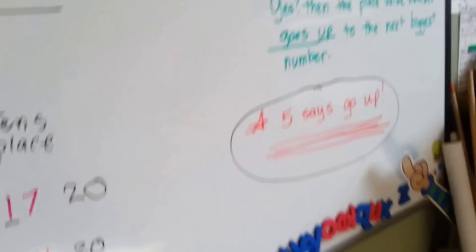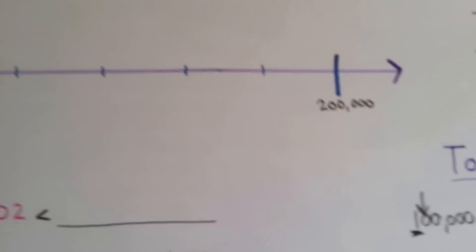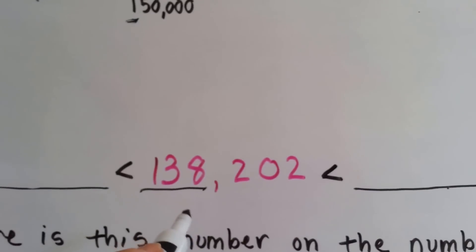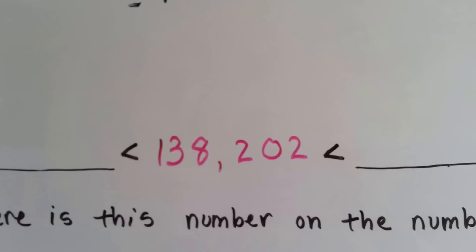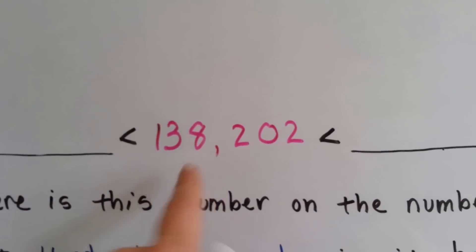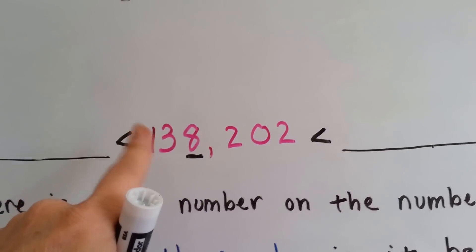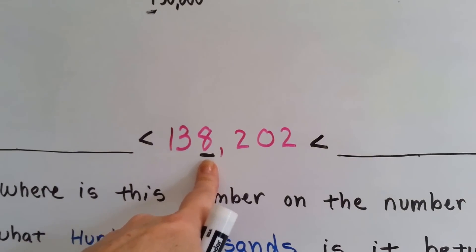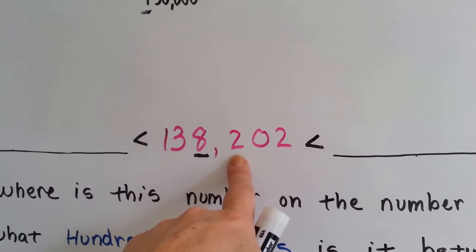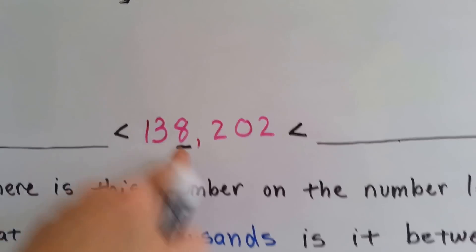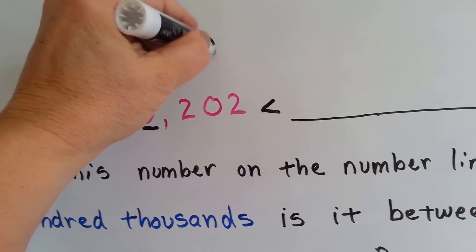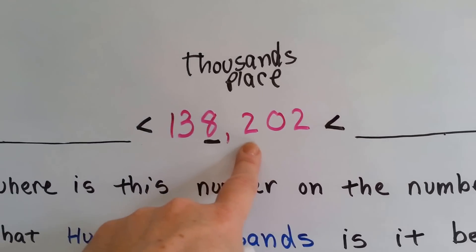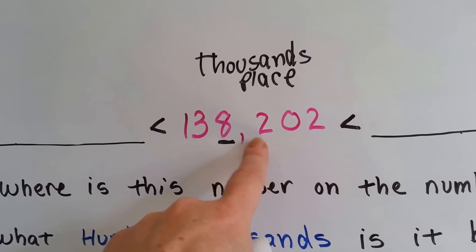Now I'm going to show you one quick thing. What if we were rounding 138,202 to the 1,000th place — not the 100,000th? Where's the 1,000th place? It's here — it's the 8. So if you're rounding to the 1,000th place, you still identify the number you're rounding and use the number to its right to tell you what to do. We use the 2 to tell the 8 what to do. 5 or bigger says go up, and it's not a 5 or bigger — it's a 2. So it tells the 8 to stay the same.